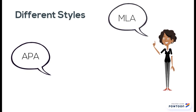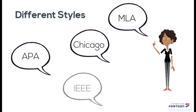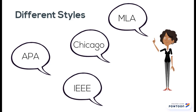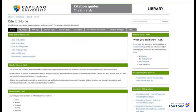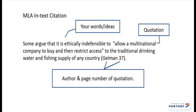There are a number of popular style guides, and they all cover a comprehensive array of material types. Click the gray citation guides link on the CapU library homepage to find more information about all these styles. For now, though, let's just look at one style and one material type.